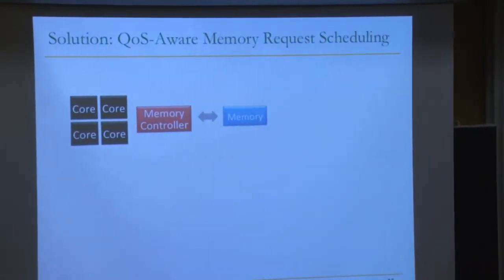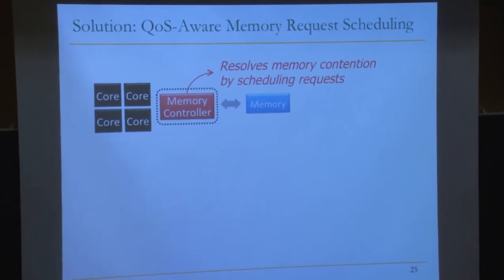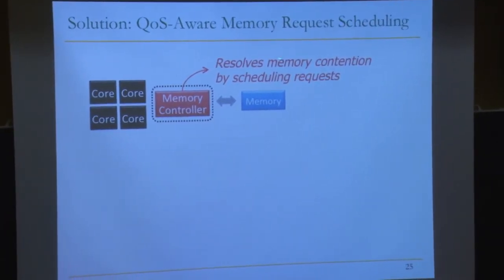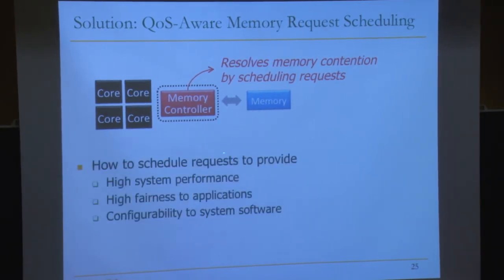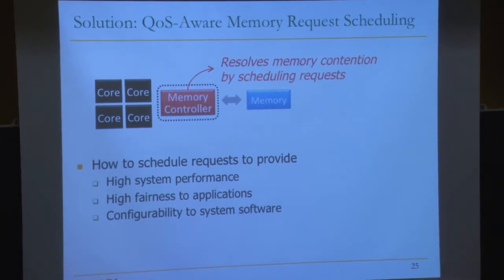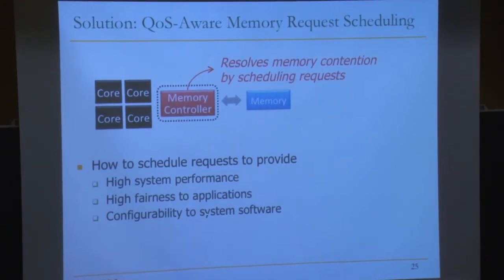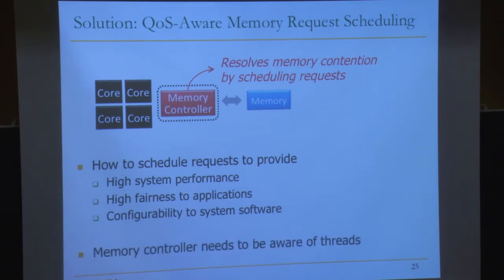The solution is to design a memory controller that is quality-of-service aware. Its function is to resolve memory contention by scheduling requests. How do we schedule requests to provide high system performance and high fairness? We'd also like to make the controller configurable to system software, so the OS can say this application is more important — prioritize it. Memory controllers need to be aware of threads to satisfy all of these goals.